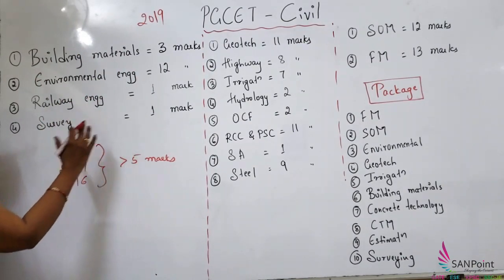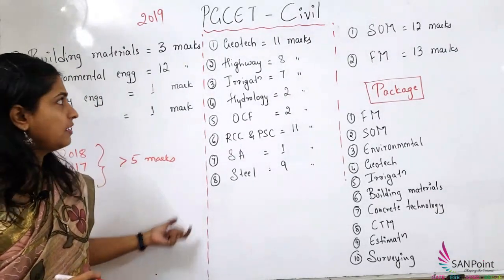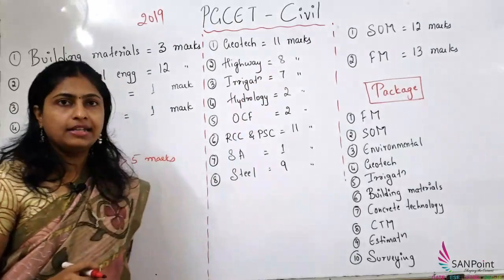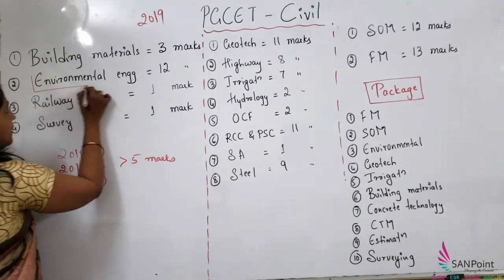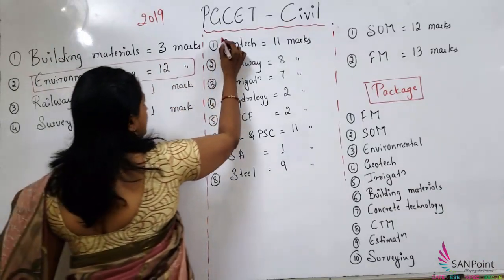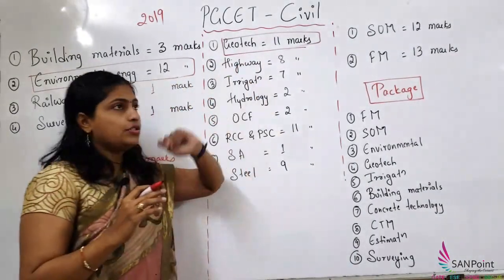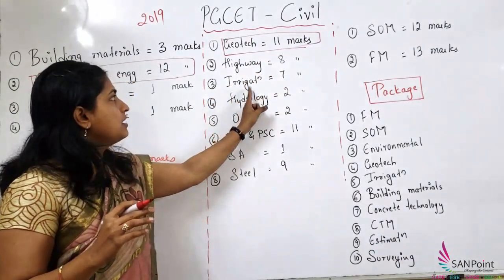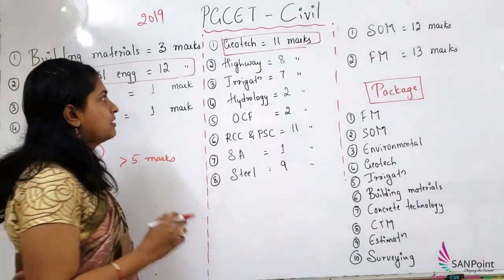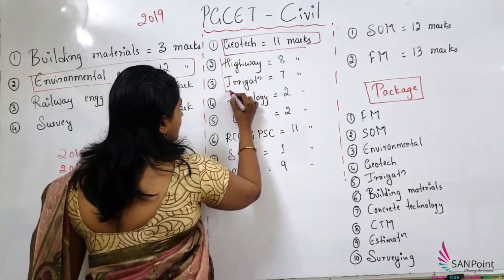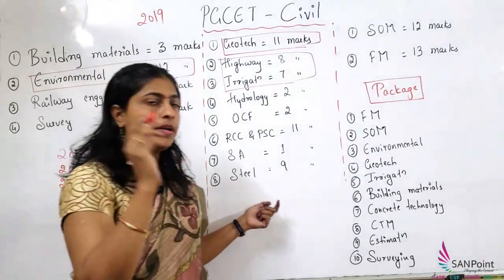After the explanation of the complete pattern and scheme, I will be explaining questions on these topics. Some topics will be solved by Anchit sir. Geotech again has 11 marks weightage — compared to previous years the weightage remains the same with no much fluctuation. In highway engineering, around 8 marks; irrigation 7 marks; hydrology 2; OCF 2; PSA/RCC level; SA 1; and steel 9 marks. Highway and irrigation are also little stable. Questions on these topics will be solved by Anchit sir.